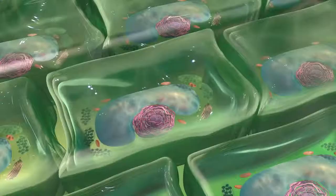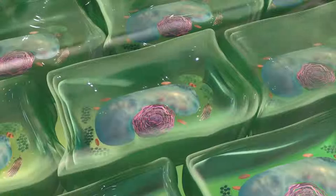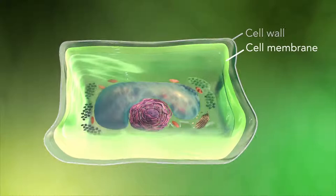Plant cells also have a cell wall outside of their cell membranes that shape, support, and protect the plant cell. Animal cells never have a cell wall.